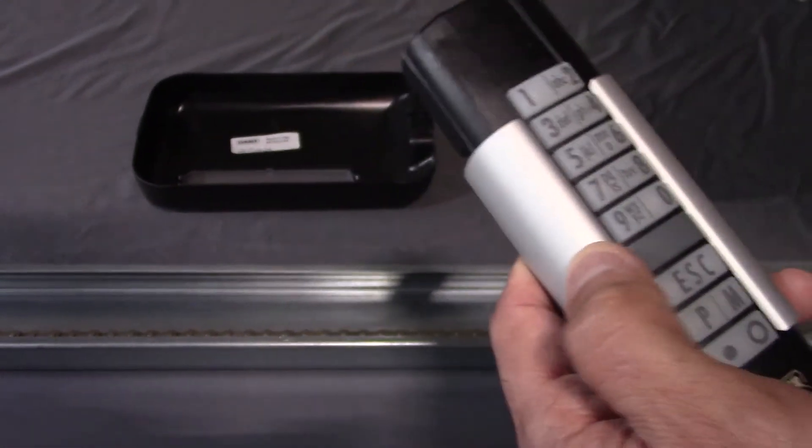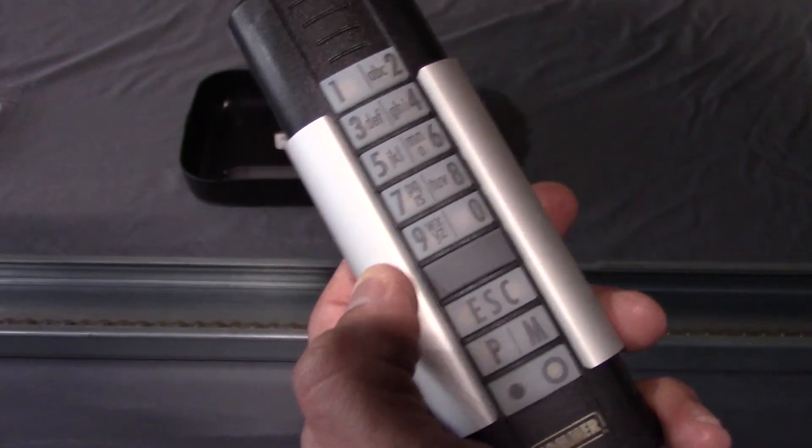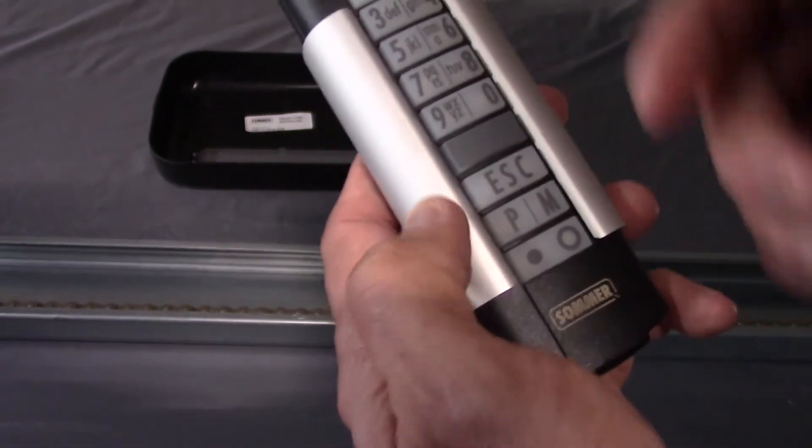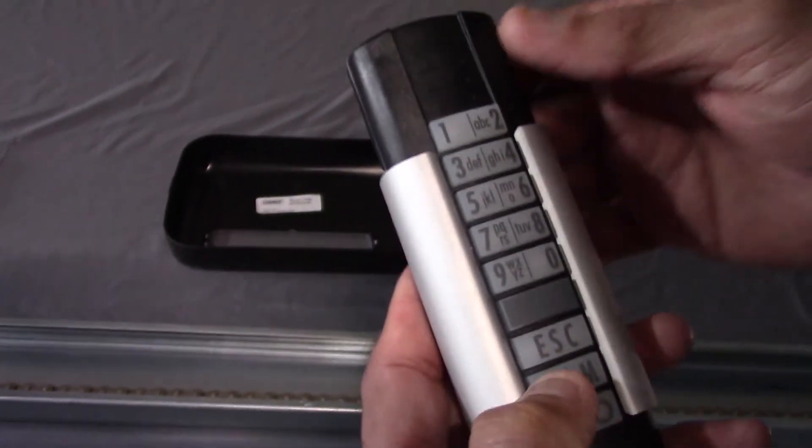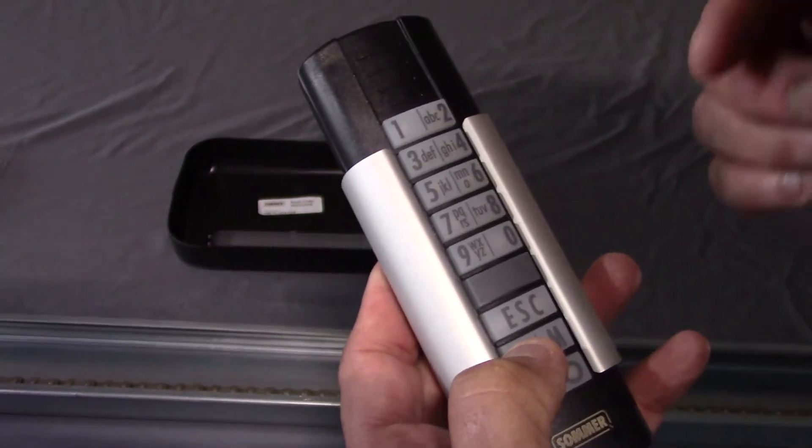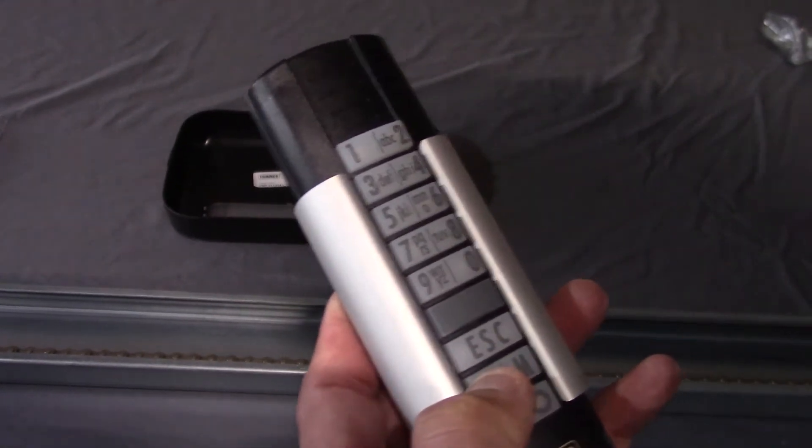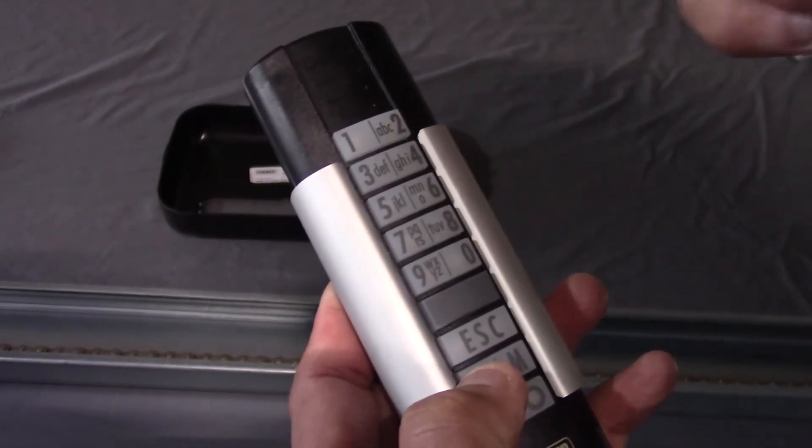If you want to add a second door to the same keypad, you follow the same process. You start with the letter P, but this time the code has to start with a different number than the one you used first. Right now I used the number one.